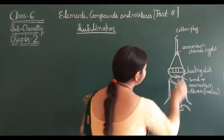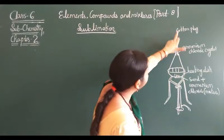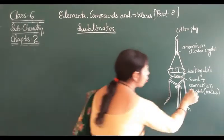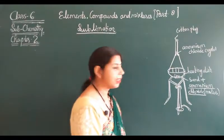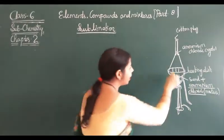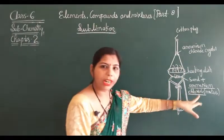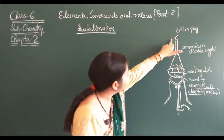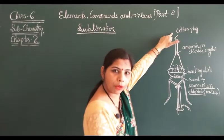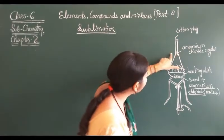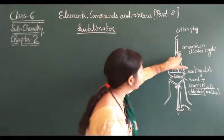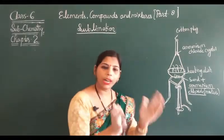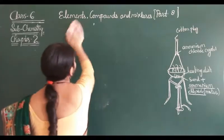We place a funnel on top. As it starts heating, the ammonium chloride, being a sublime substance, undergoes sublimation. It is not going to escape — it is going to collect as crystals in the neck of the funnel. The sand remains in the dish. This is how sand and ammonium chloride are separated by the sublimation process.